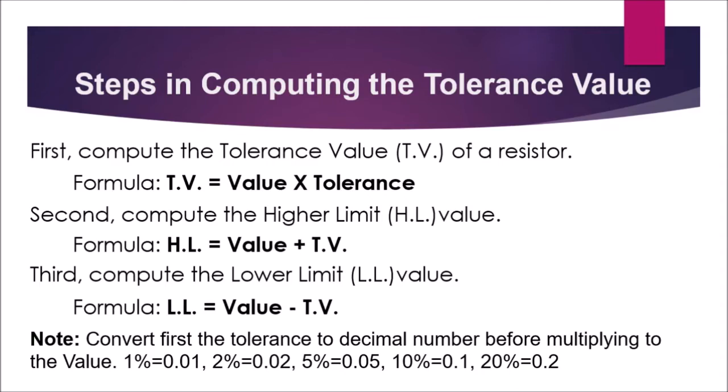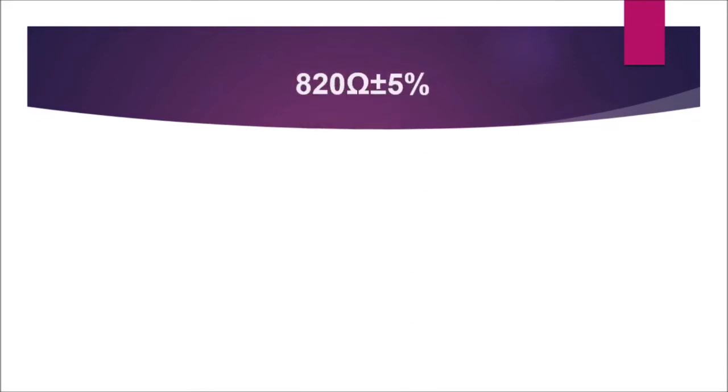Now let us proceed to an example. Suppose we have 820 ohms ±5%. The positive sign on the tolerance means that will be the higher limit — you're going to add 5% to the value — while the negative sign on the tolerance means you're going to subtract 5% from the value.